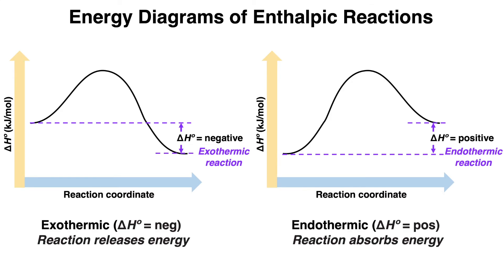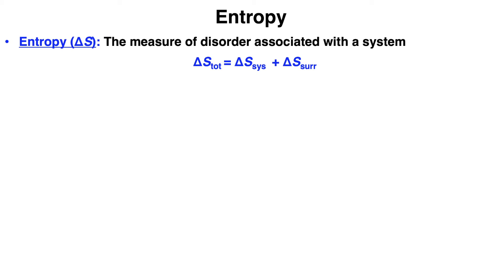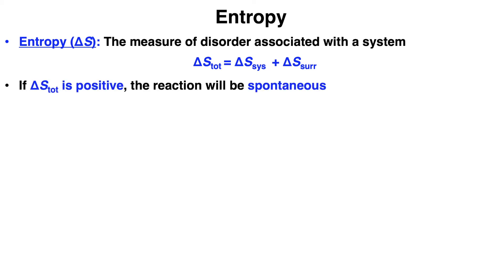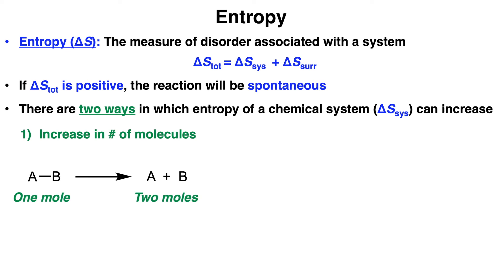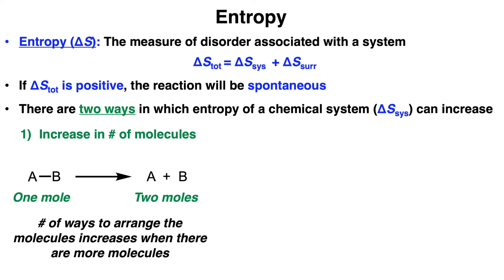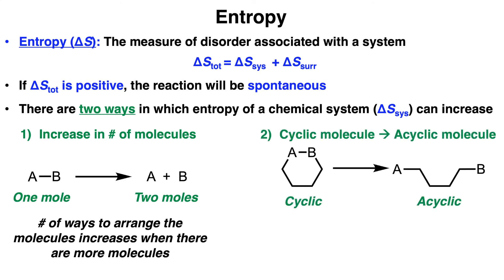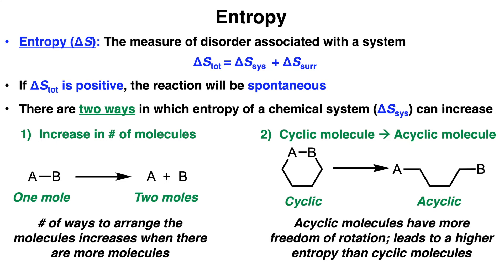Now let's talk about entropy, or delta S. Entropy is the measure of disorder associated with a system or a reaction, and the total entropy equals the entropy of the system plus the entropy of the surroundings. If the total entropy is positive, the reaction is considered to be spontaneous. There are two ways entropy of a chemical system can increase: by increasing the number of molecules, or by going from a more rigid cyclic molecule to an acyclic or linear molecule, since acyclic molecules have more freedom to rotate.